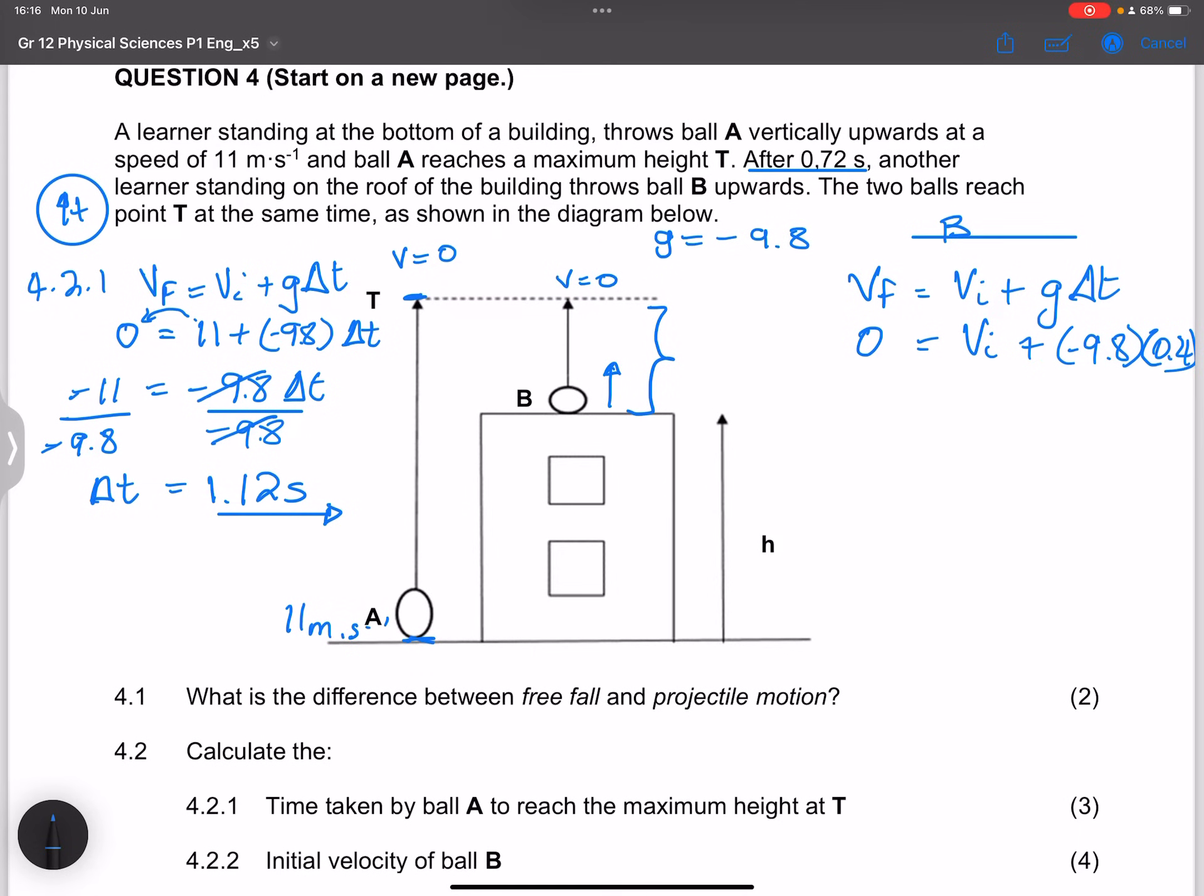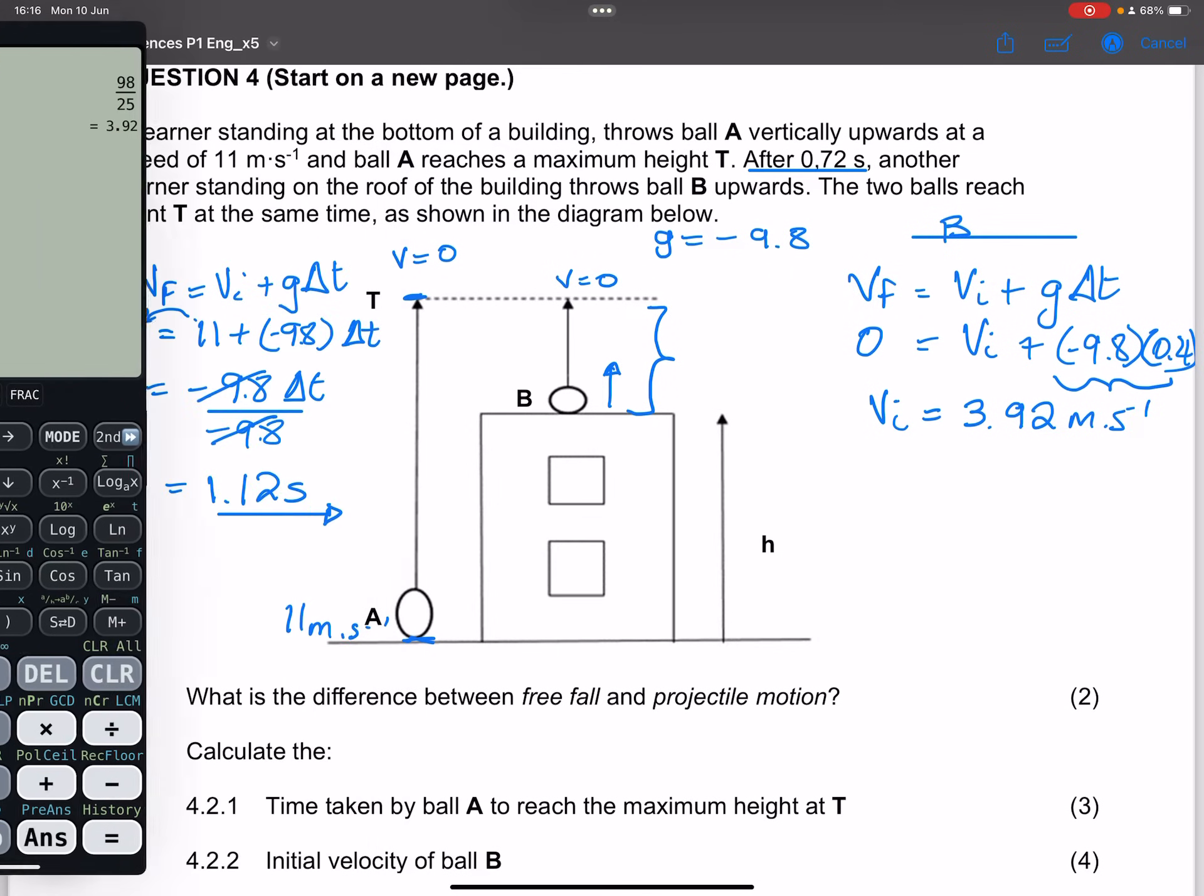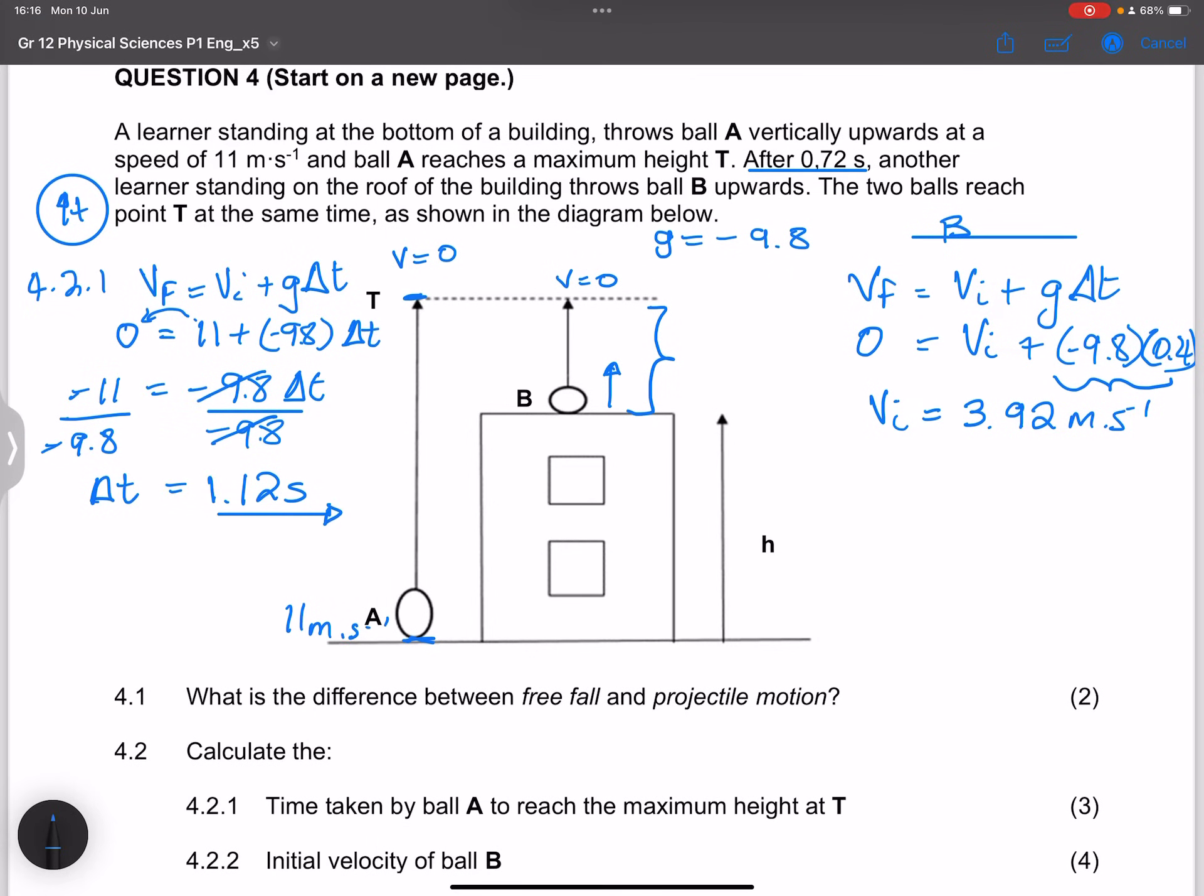So our initial velocity, we're going to take 9.8 multiplied by 0.4. But remember, it's going to be negative on the right-hand side. When we take it to the other side, it becomes positive. It tells us that we're throwing this object upwards. So we get an initial velocity for B of 3.92 meters per second. Now they said the initial velocity, which means we must also specify direction. So this must be upwards. So that's our initial velocity for B.